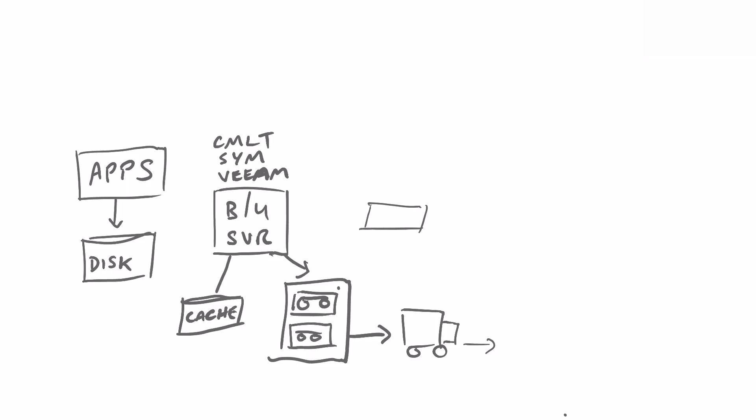NetApp AltaVault is an appliance available as hardware or as a virtual appliance to run on virtualization software like VMware or Hyper-V. It goes into your environment and your existing processes around backup continue unchanged — whatever backup software or method you're currently using. Instead of backing up to tape, the backup software will point those backups to AltaVault on the network.